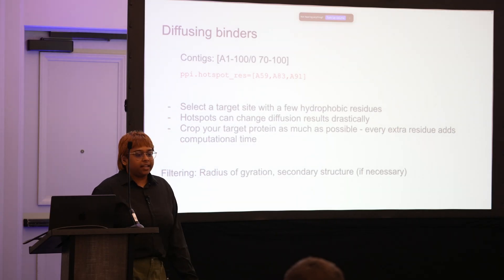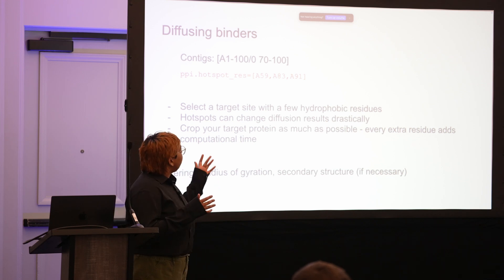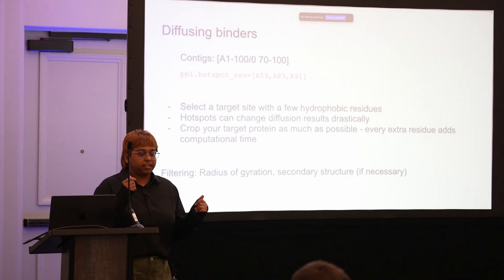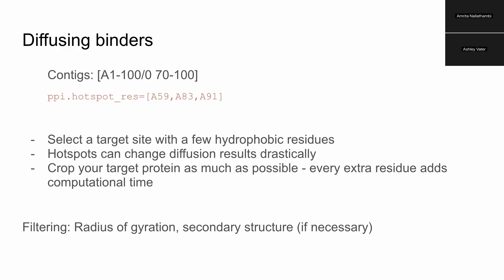There is a conditioned version of RF diffusion that's been trained to hit hotspot residues with the diffused protein when you specify those. We're going to be using that and actually comparing the two models. Most of the time when you're doing binder design we want to use hotspots so that it's not putting your binders all over the target protein and just putting it in the place that you want.